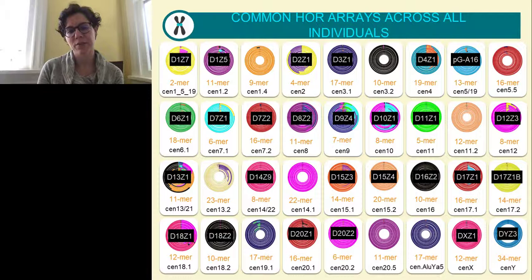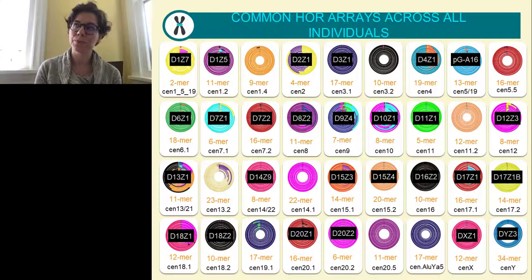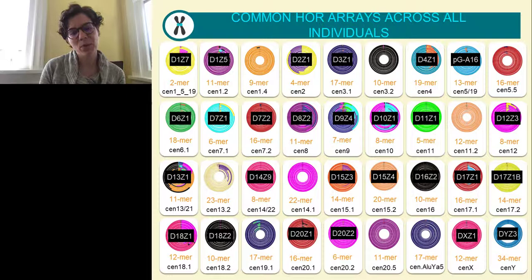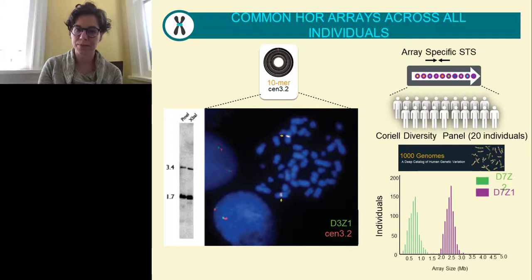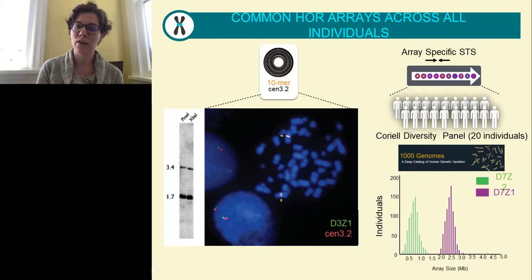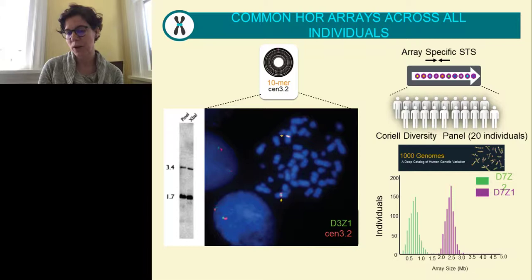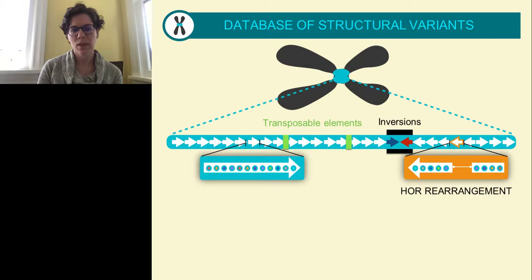By digging into GenBank and pulling out previously characterized satellite arrays as positive controls, these satellite arrays show strong concordance with what's previously shown in the literature. For novel arrays, I performed validation — for example, a 10-mer repeat found on centromere 3 was confirmed to map to chromosome 3 by FISH, its periodicity validated by Southern blotting, its frequency confirmed through Coriell diversity panels, and its array sizes matched thousand genome population datasets.